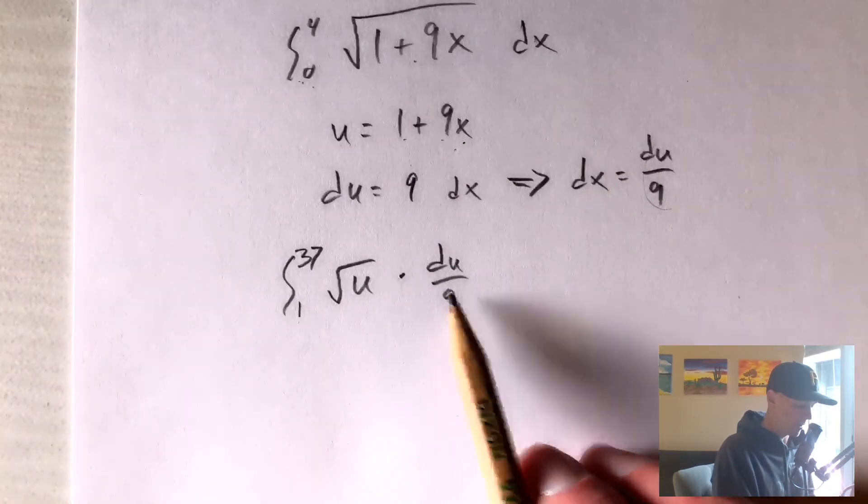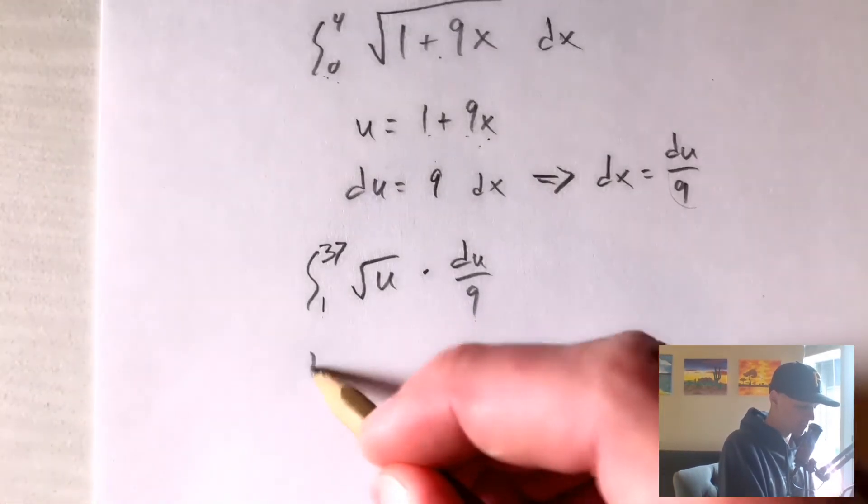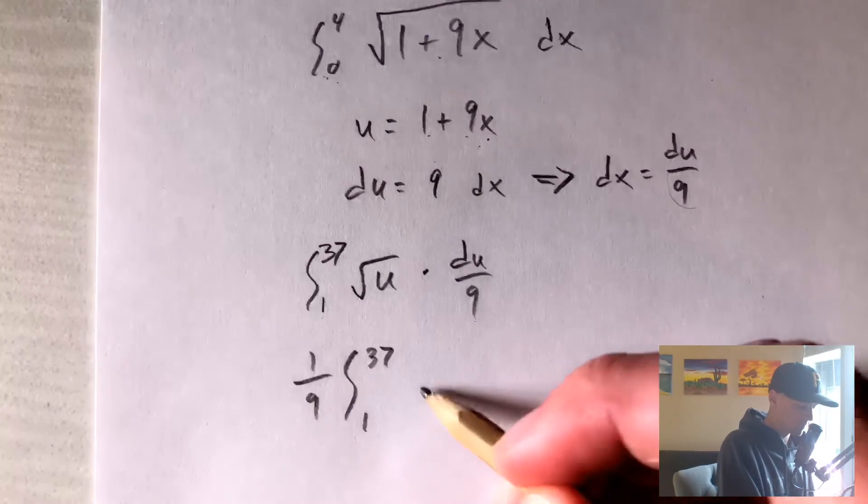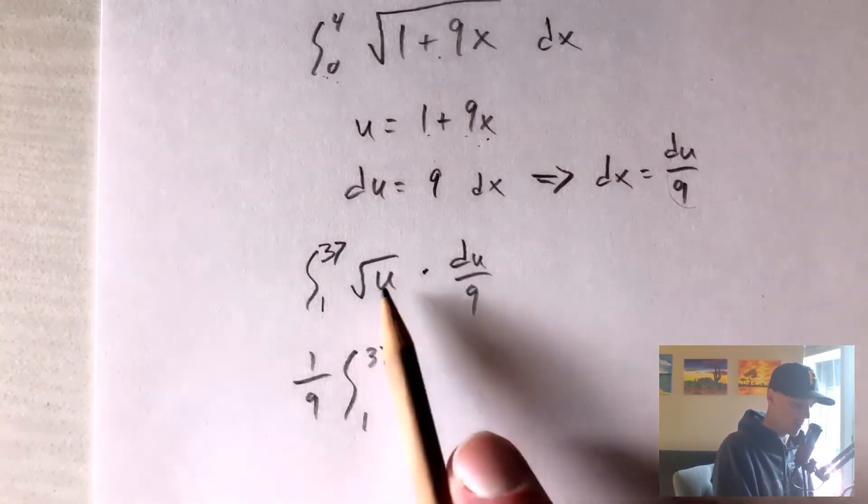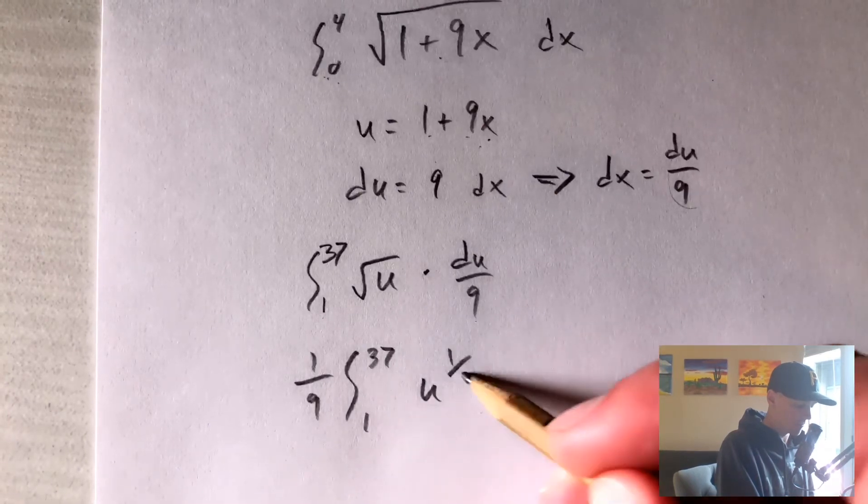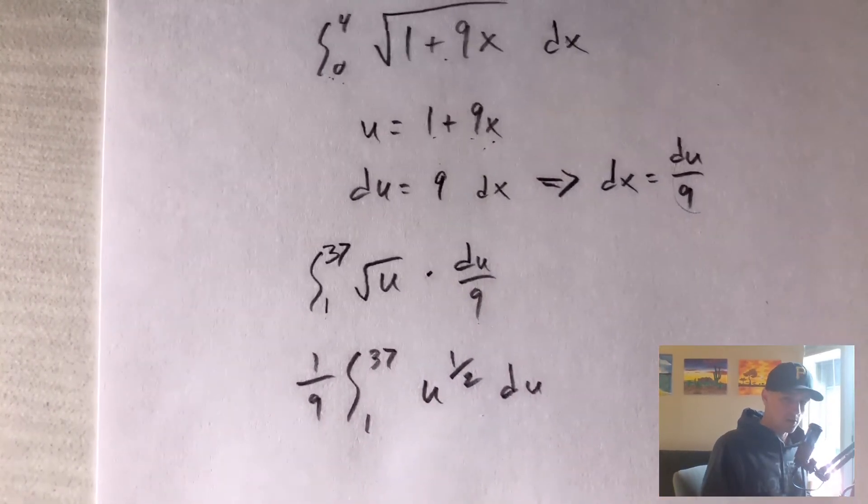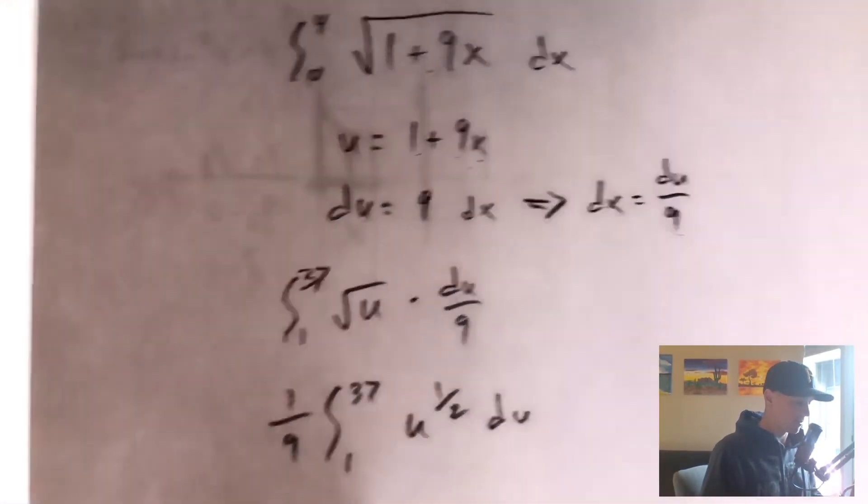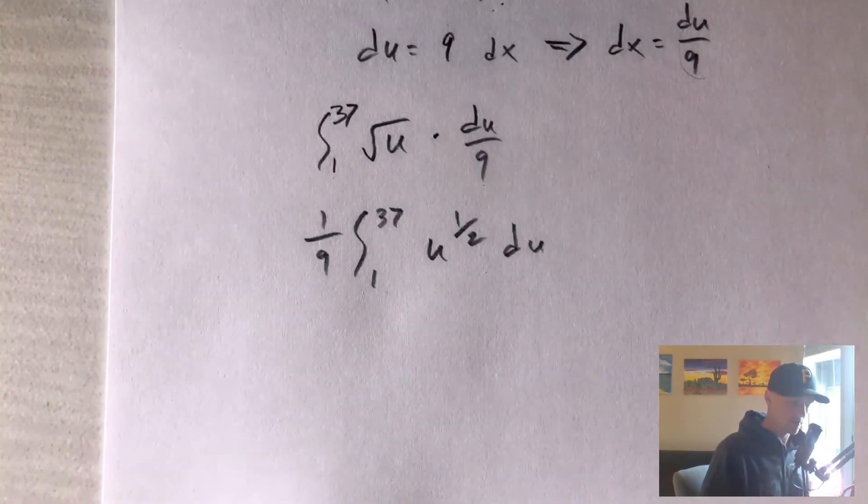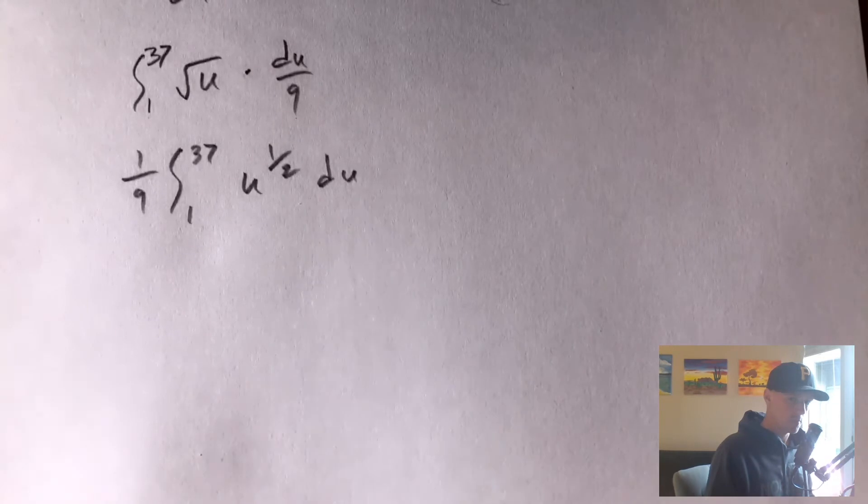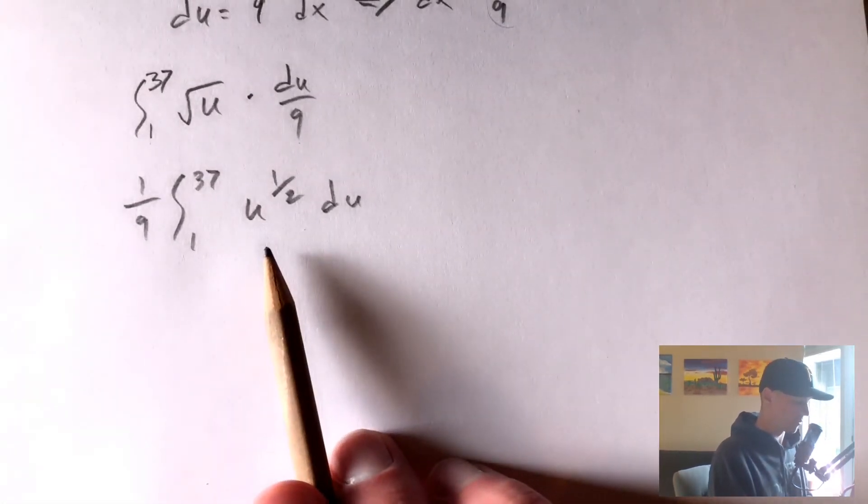So first of all, we can pull out a 1 9th because it's a constant. And the other thing we want to do is rewrite our square root of u as u to the 1 half. So generally, when you're integrating a square root of something, writing it as that thing to the 1 half is going to make it a little easier to integrate, because to integrate this function, we can just apply the power rule.